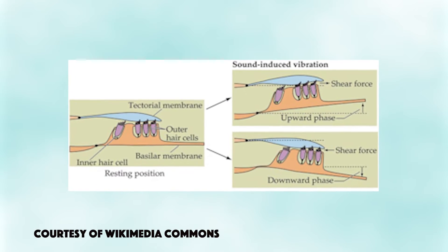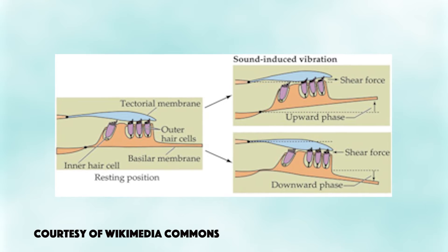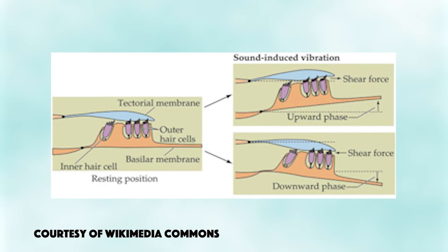All these vibrations cause the fluid within the cochlea to ripple, and as a result a traveling wave forms along the basilar membrane. Hair cells, which are sensory cells sitting on top of the basilar membrane, ride the wave as the hair cells move up and down.